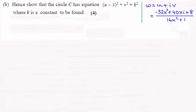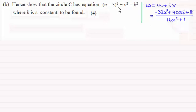Hi there. Now for this part of the question we've got to show that (u - 3)² + v² equals a constant k².